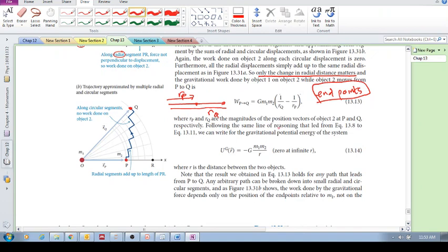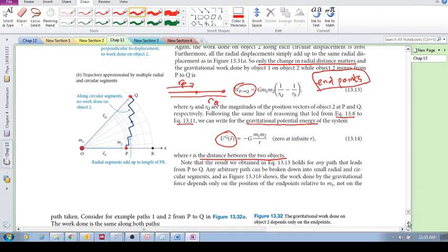Okay. So, following the same line of reasoning from equation 13.8 and 13.11, we can also write the gravitational potential energy. So we looked at work. Now, we want to look at gravitational potential energy. And it looks very similar to the previous equation. But here we've got R, which is the distance between the two objects.